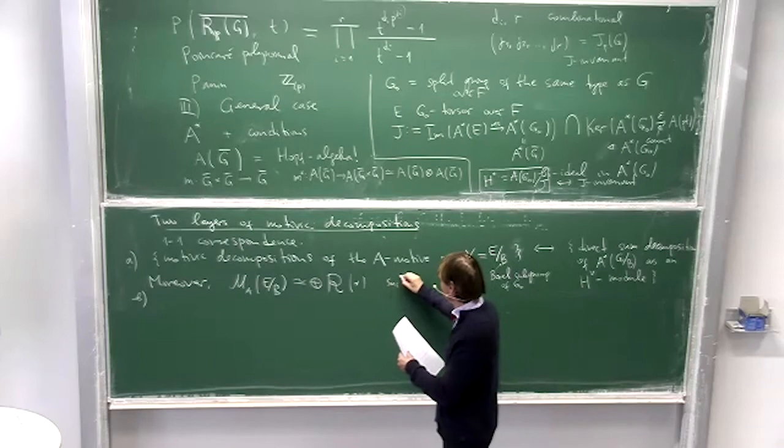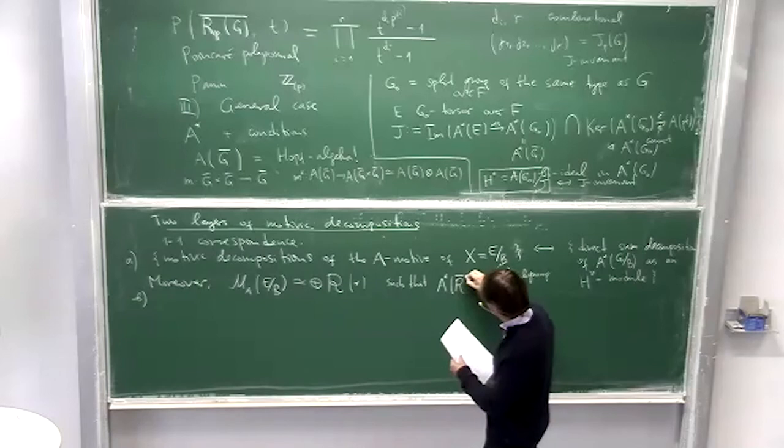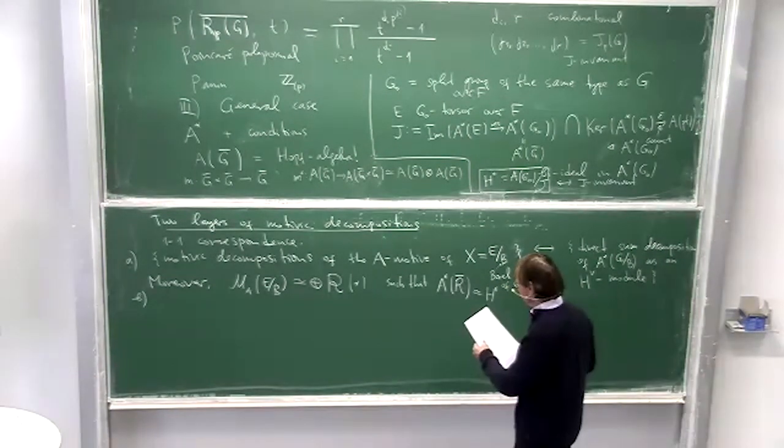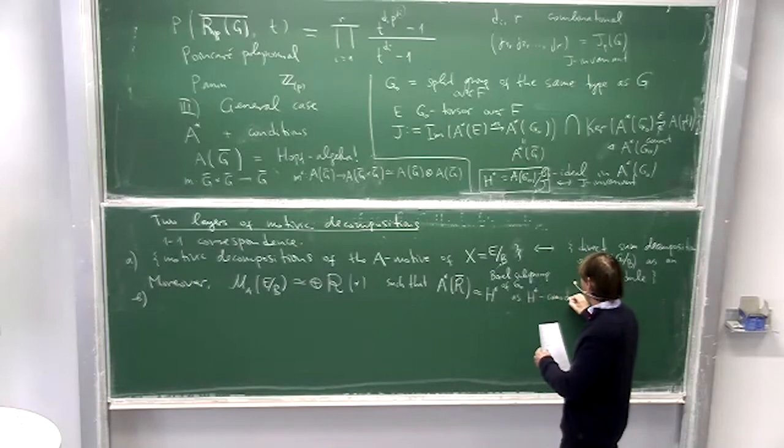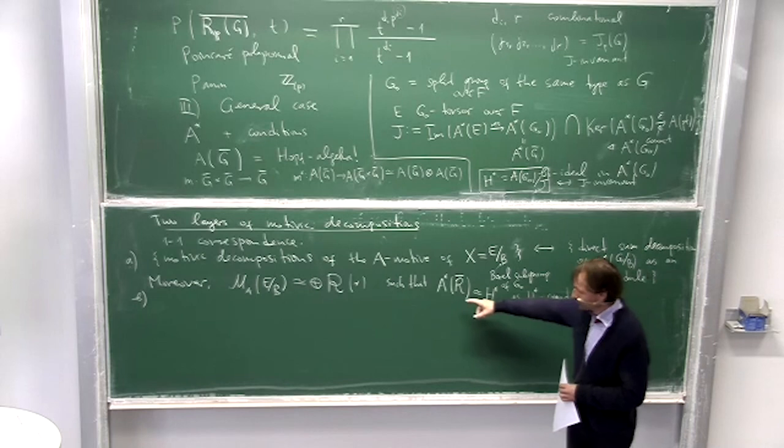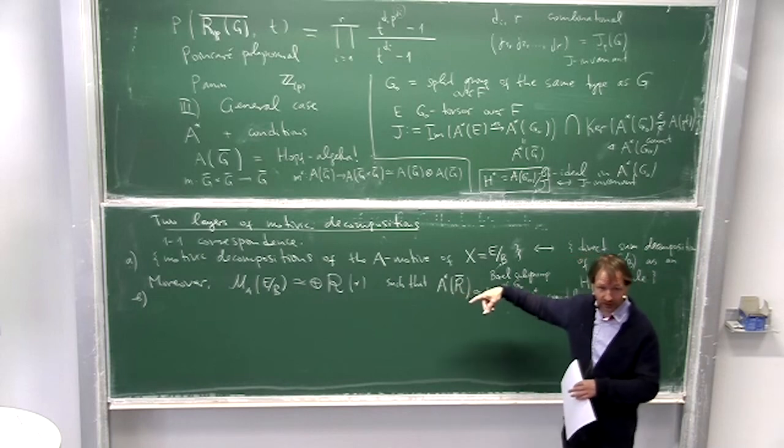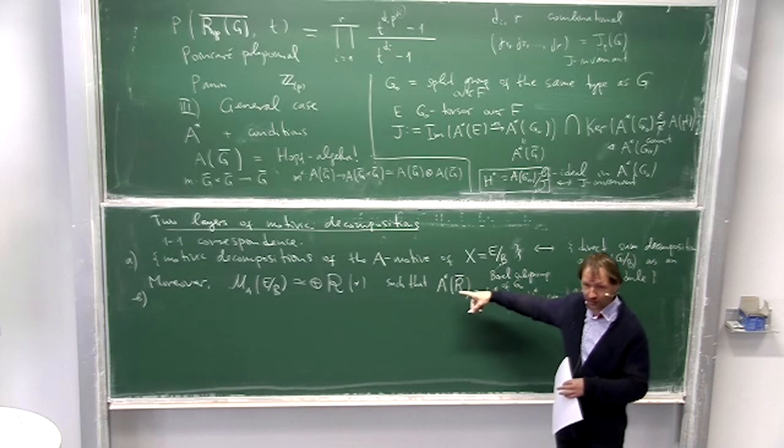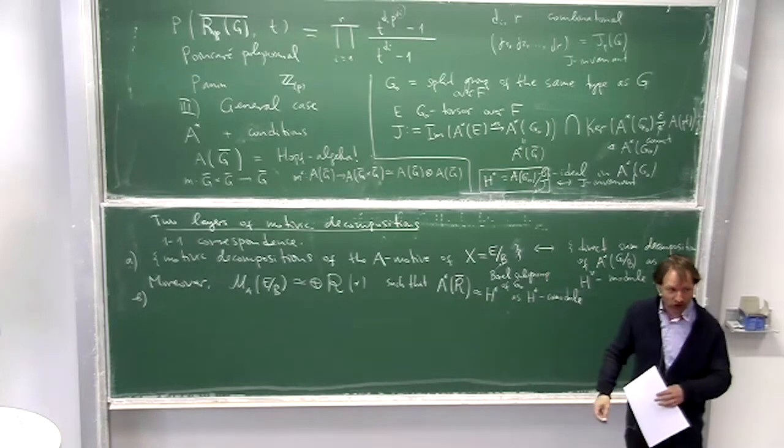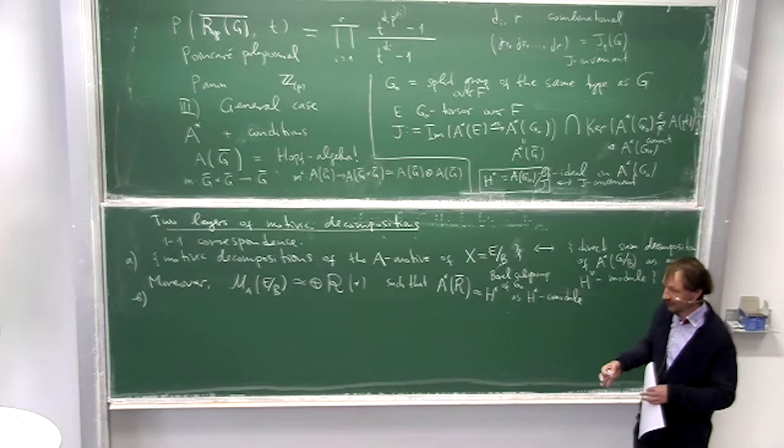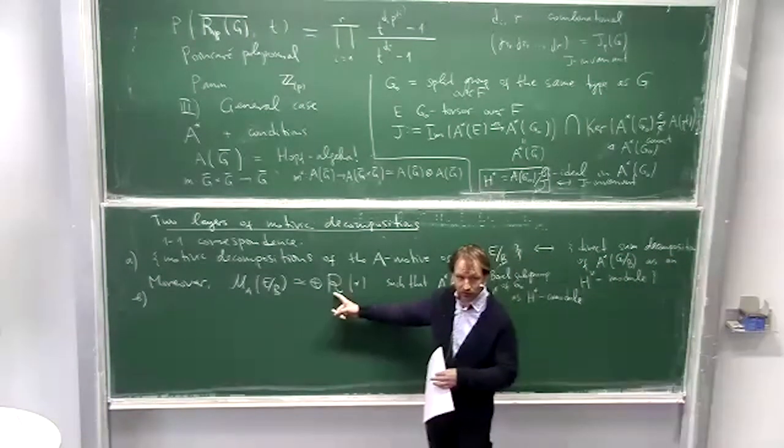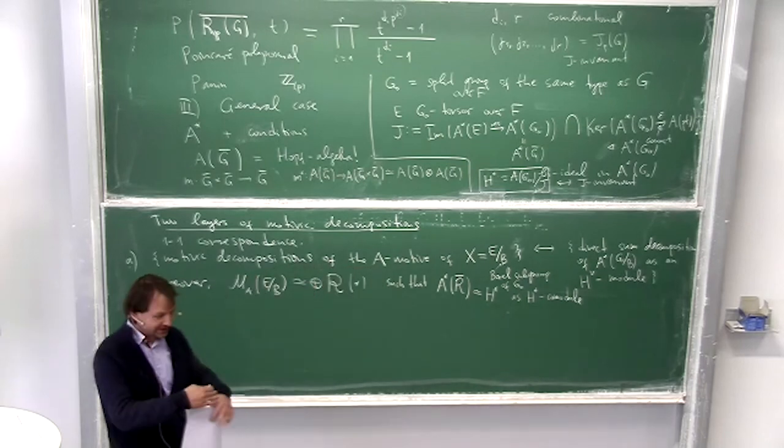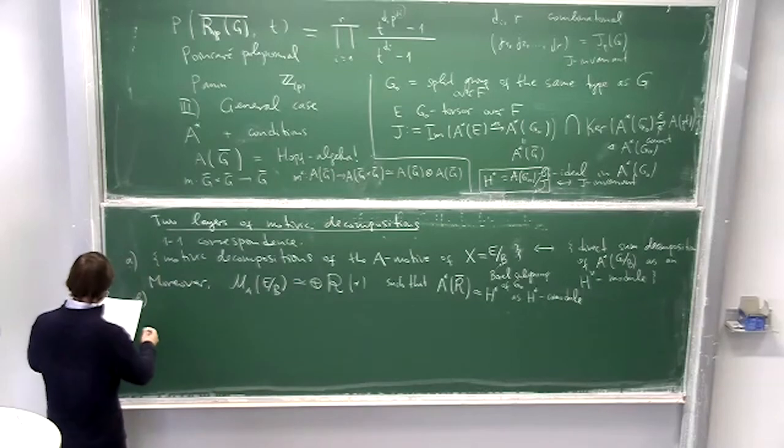And this is actually precisely what happens for Chow. The Chow case, it's completely equivalent to the previous formula. In general for general A there is a second layer because it can happen. Yeah, and if you get more, so the aim: the A-motive of X is isomorphic to a direct sum of some motives R with shifts as that.